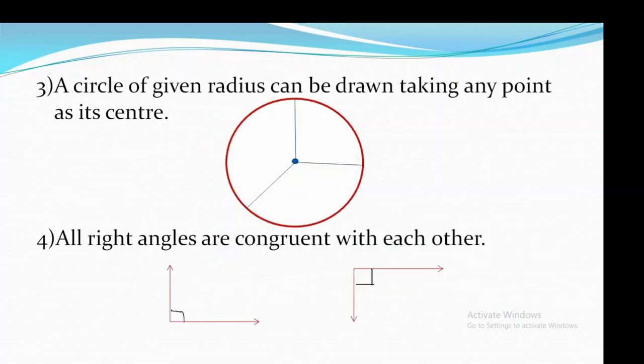The third postulate: a circle of given radius can be drawn taking any point as a center. You can draw a circle of a given radius by taking any point as a center. That is Euclid's third postulate.